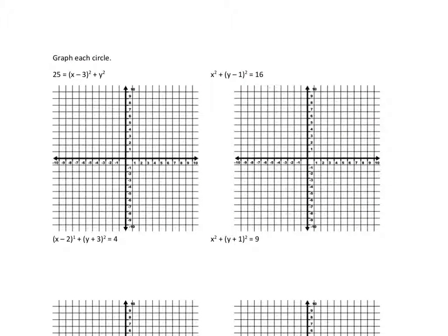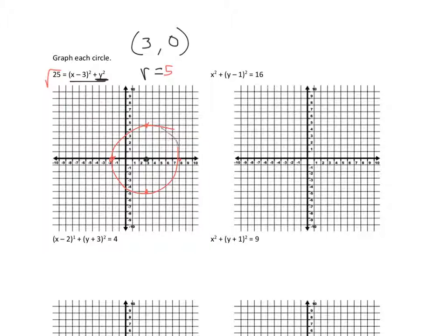To graph a circle, identify h, k, and the radius. For (x minus 3) squared, the x-coordinate of the center is positive 3. There's no shift on y, so the center is (3, 0). Make a dot at (3, 0). The radius is square root of 25, which is 5. From the center, go up 5, right 5, left 5, and down 5, then draw a circle.